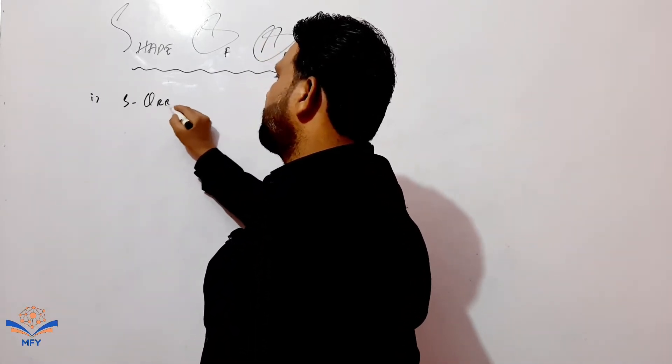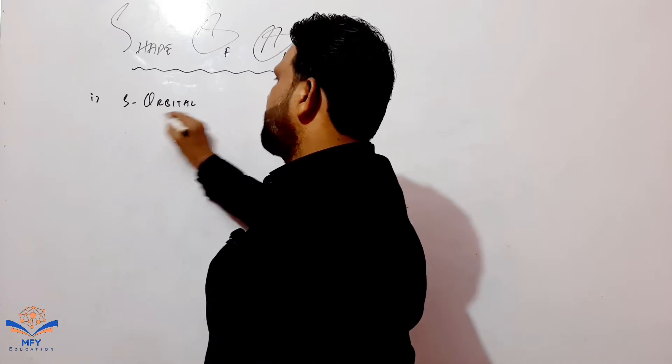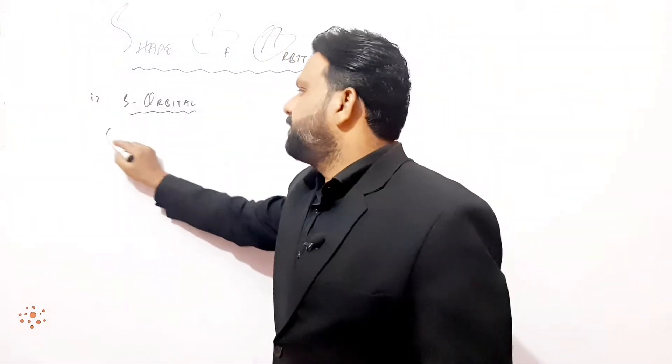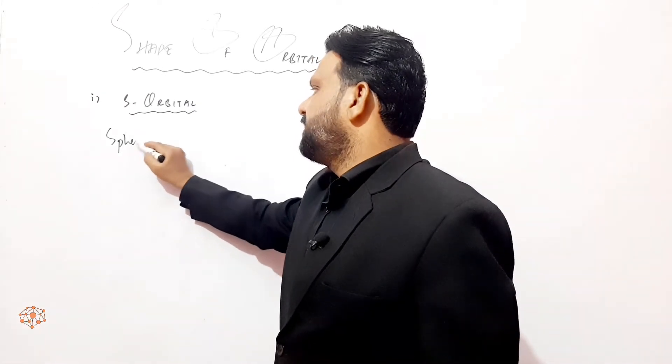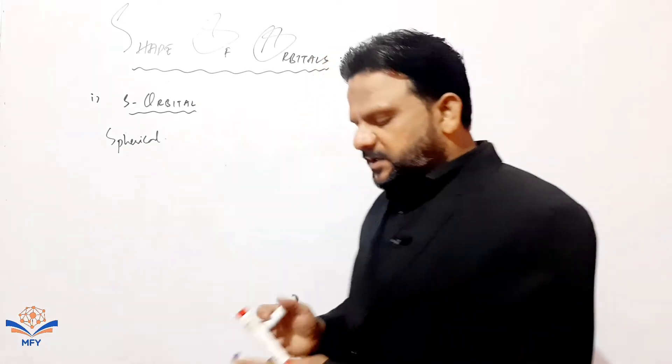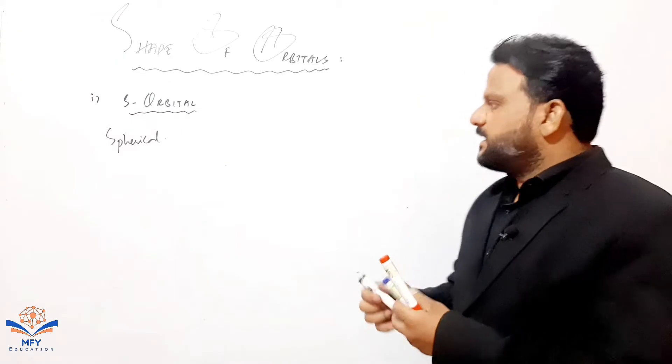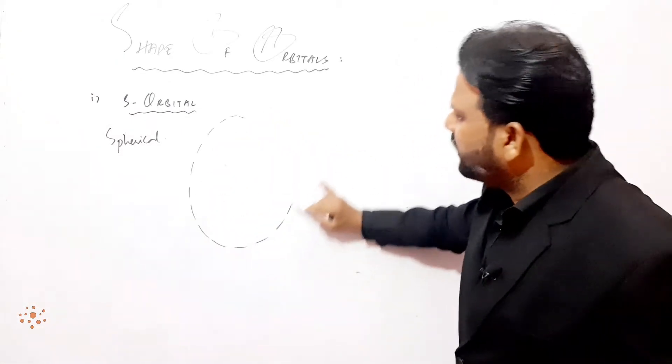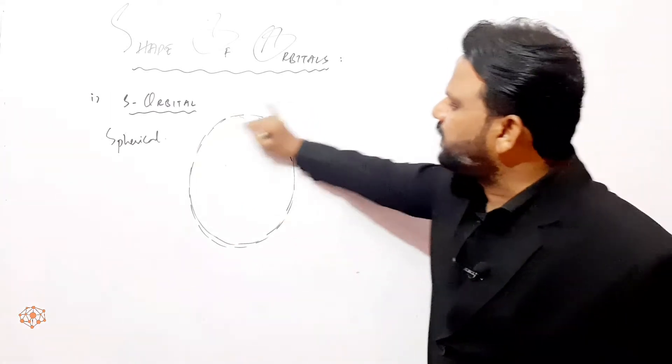S orbital has a spherical shape. The shape of s is spherical in which electrons revolve around the nucleus in the electronic cloud model.